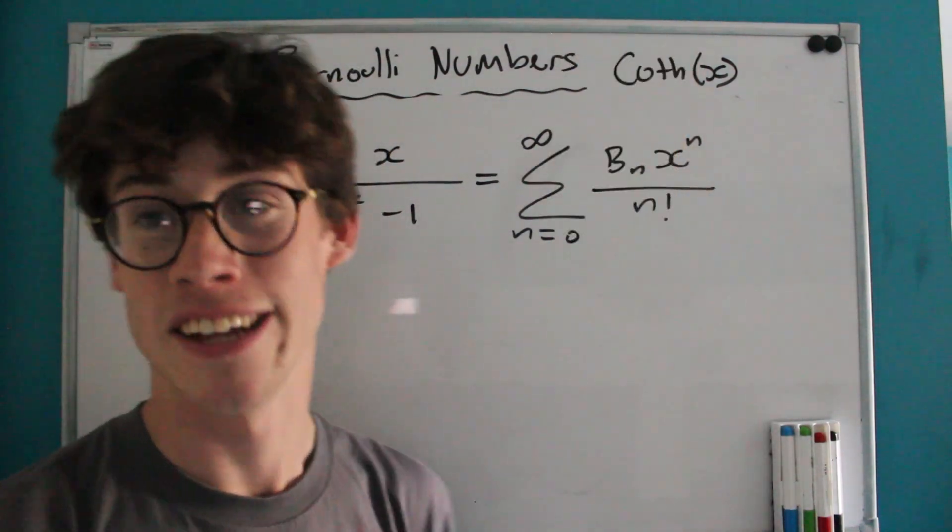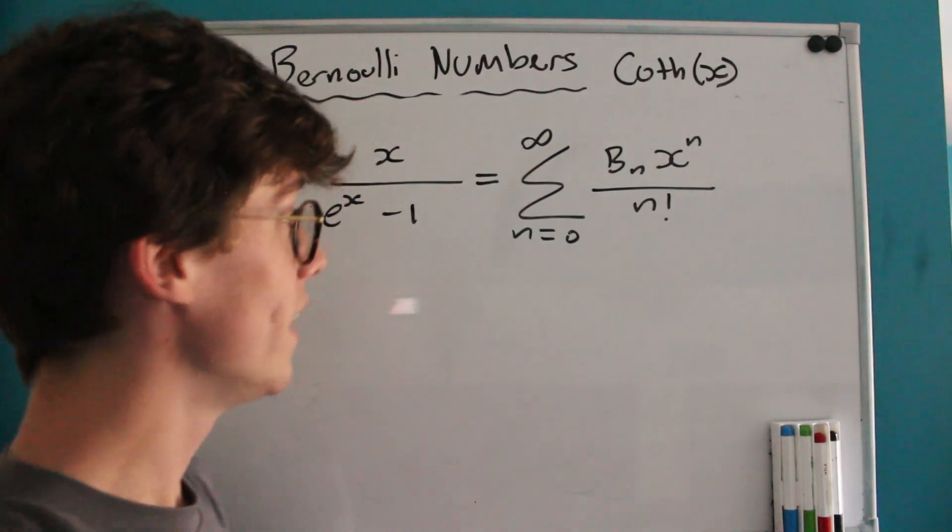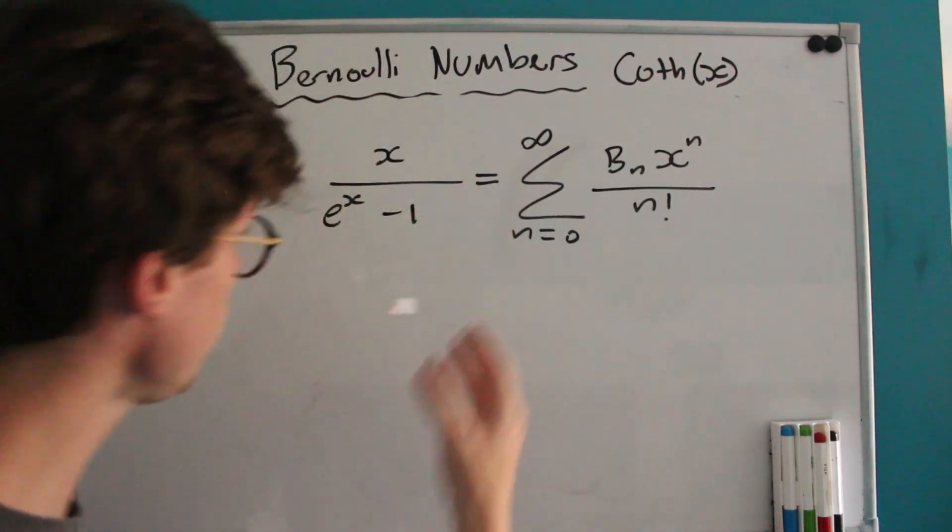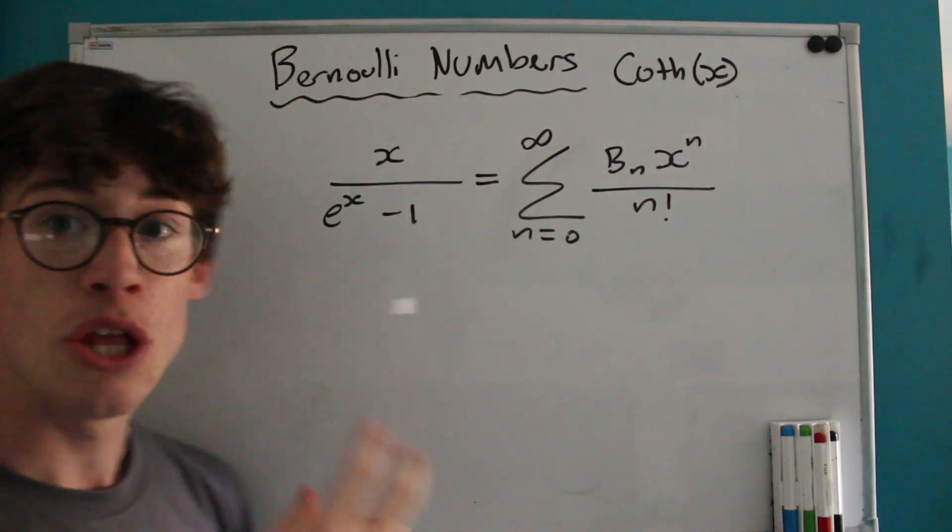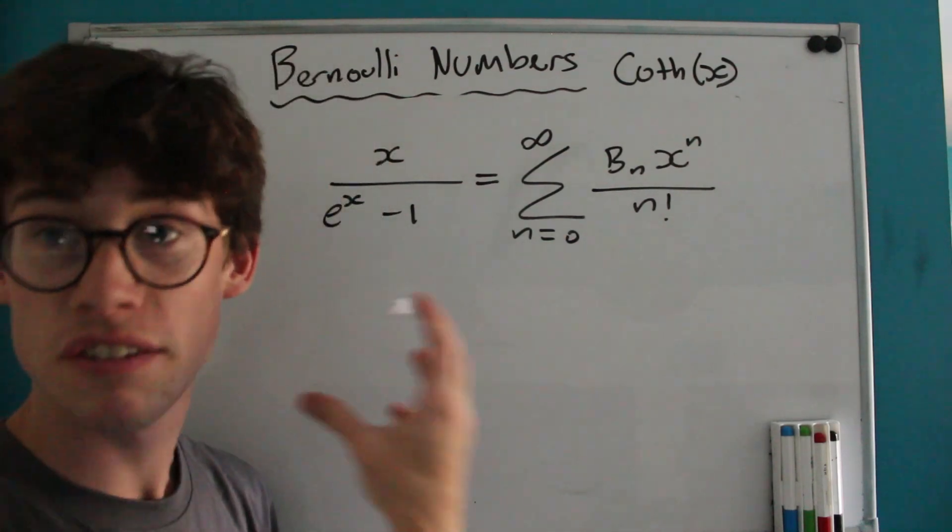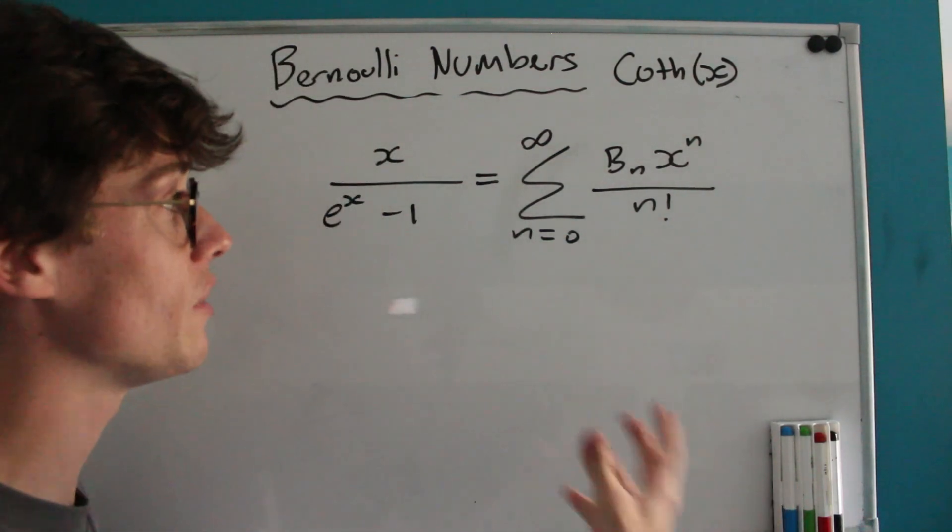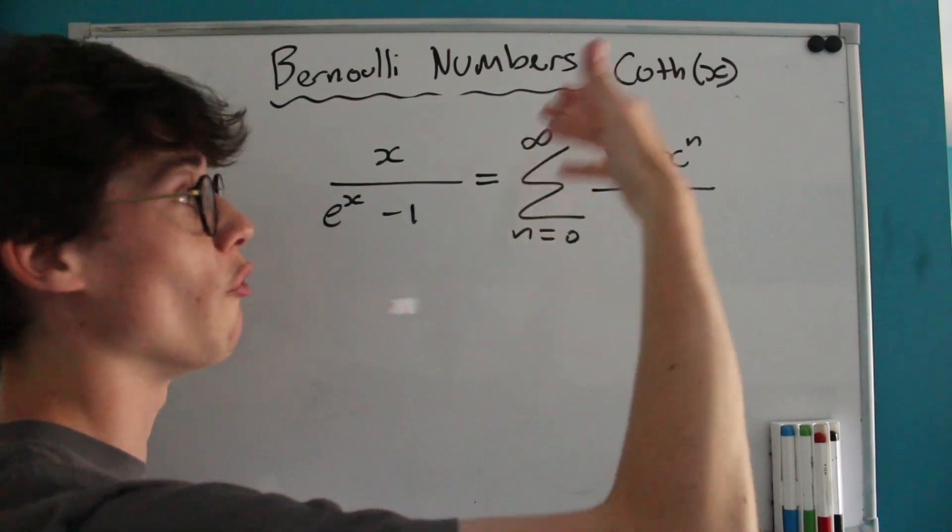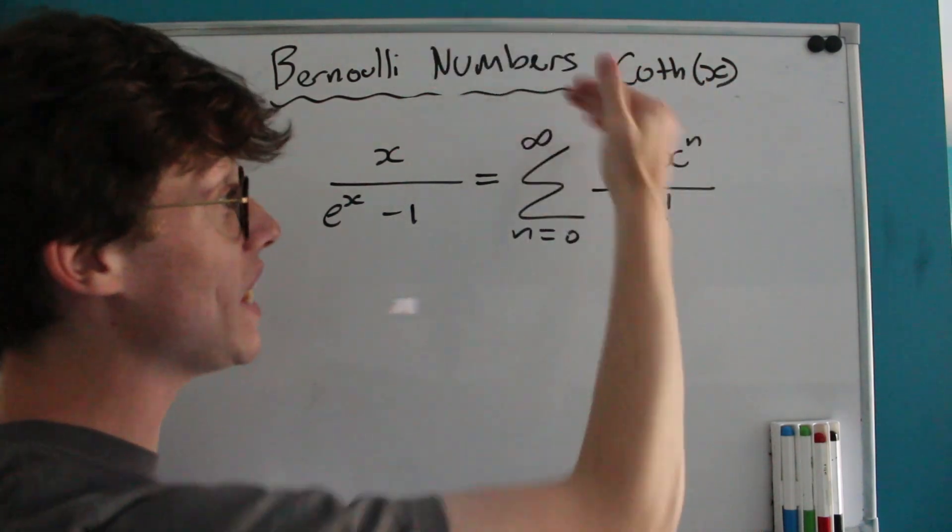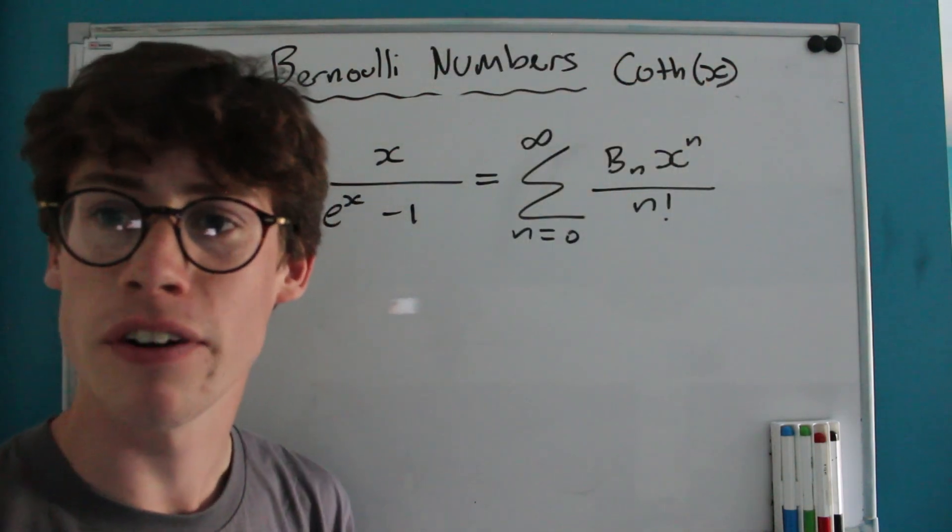I'm going to write that as coth with an H next to it. Let's start where we left off. We finished our last video looking at the Bernoulli generating function, a function that has a McLaren series for which the coefficients of X to the n are b_n over n factorial.